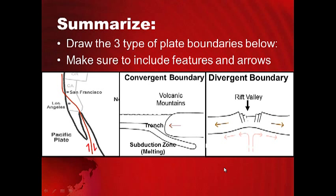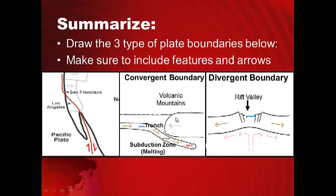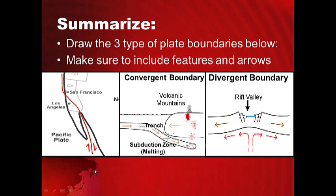Since that was a long one to write, let's do some drawings. Draw a transform plate boundary — it's a pretty simple drawing. Then draw a convergent plate boundary — make sure you draw everything: the trench and volcanic mountains forming. Finally, draw a divergent plate boundary with a rift valley spreading apart. Wait until the volcanic mountain forms, then go ahead and pause it. Have a good night and we'll see you next time.